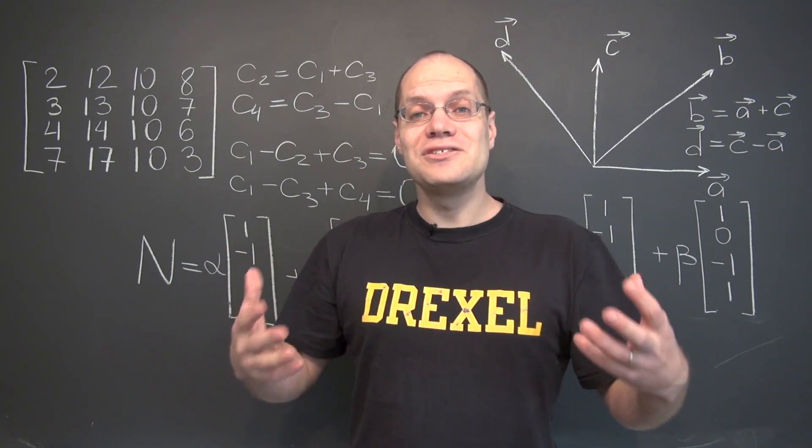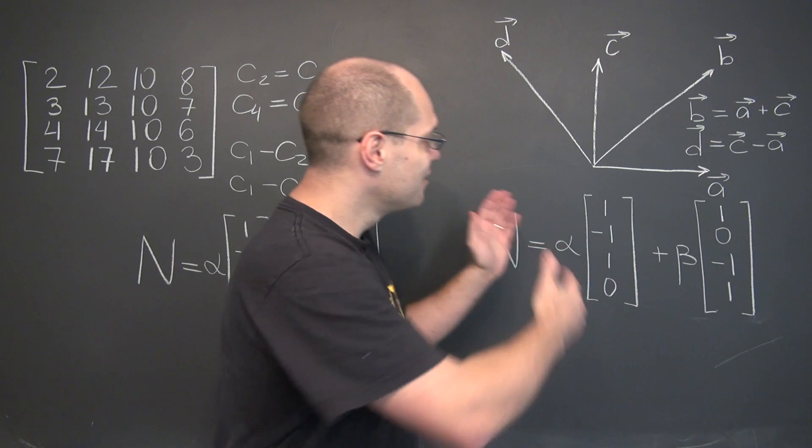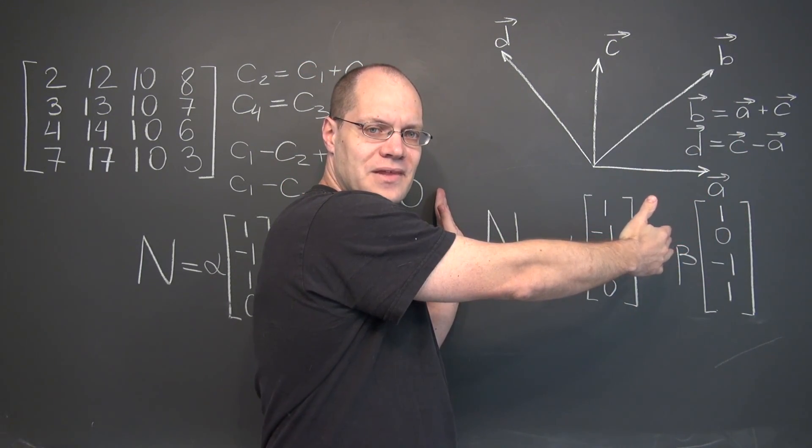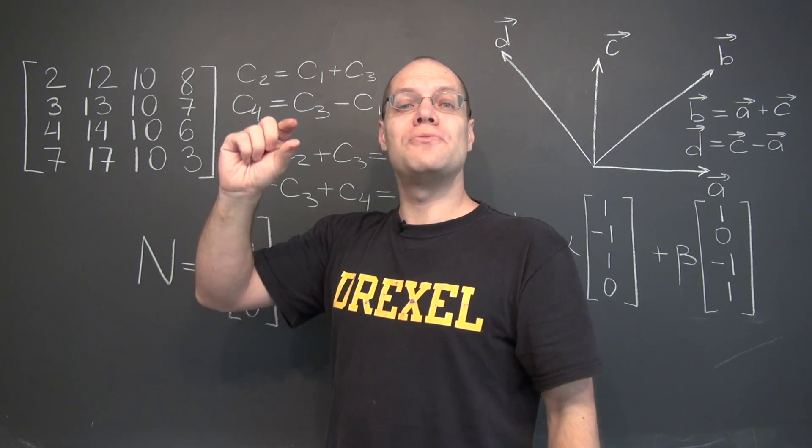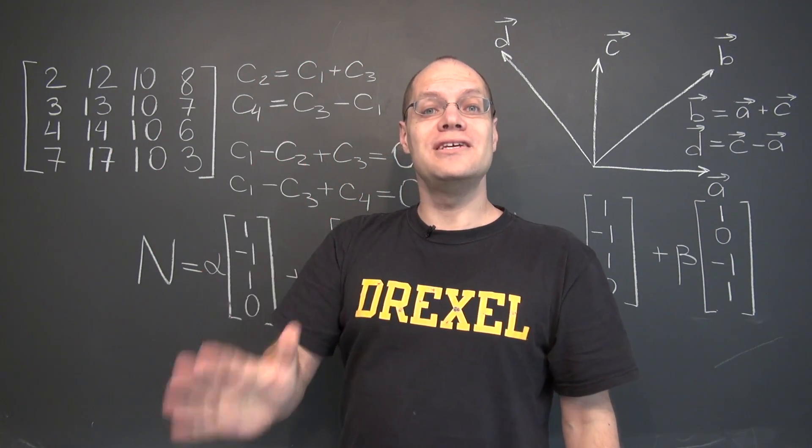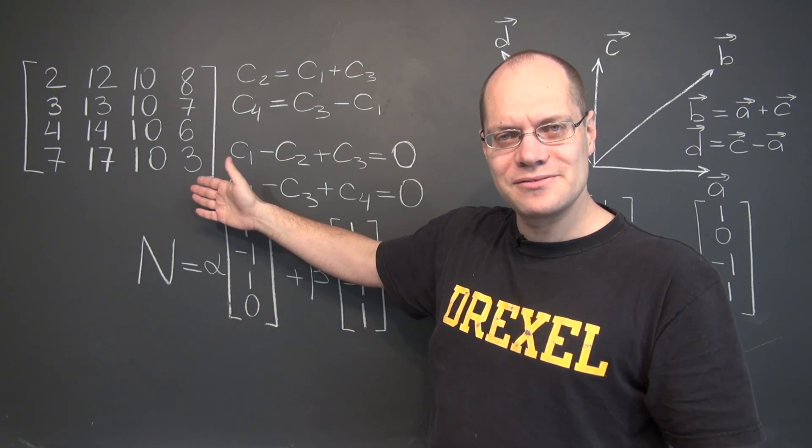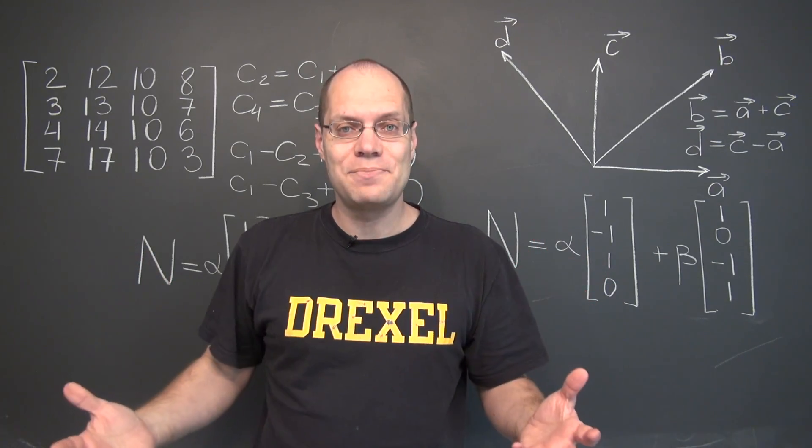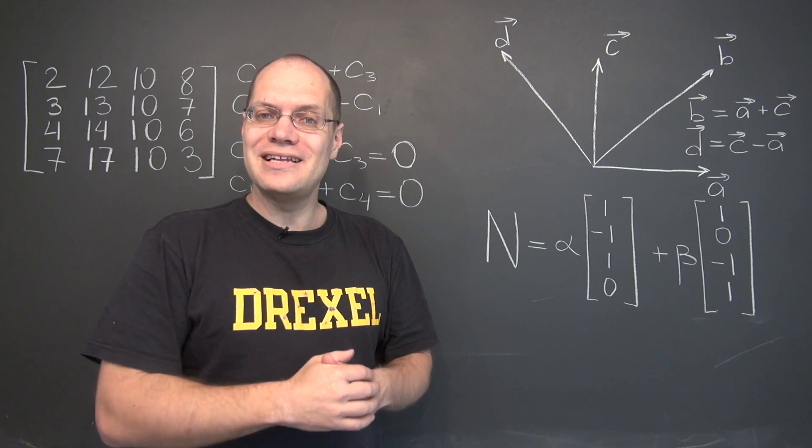Now without this video, the questions about the null space of a matrix might come as a complete surprise, because the concept was explained in the context of geometric vectors. And then all of a sudden, you're being asked for the null space of a matrix. So to make the link, all you need to do is to think of the matrix as a collection of columns. And you're once again in the situation where you're being asked for the null space of a set of vectors, which, of course, is a very natural question.